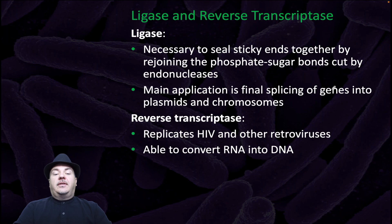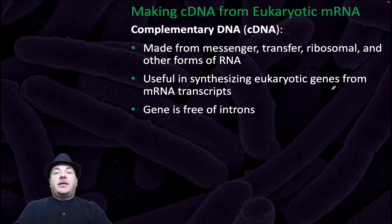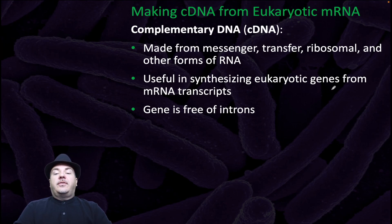Reverse transcriptase is an enzyme that replicates HIV and other retroviruses. What reverse transcriptase does is it converts RNA into DNA, which can then make complementary DNA or cDNA. It's made from messenger, transfer, ribosomal, and other forms of RNA. It's useful in synthesizing eukaryotic genes from mRNA transcripts because the gene is free of introns.